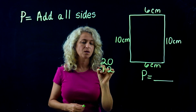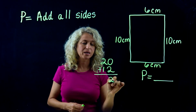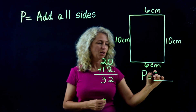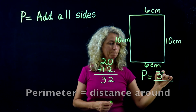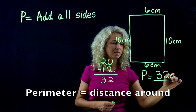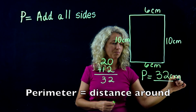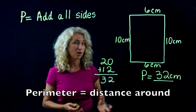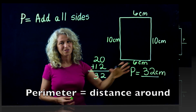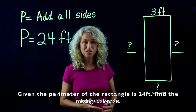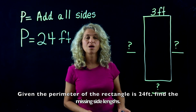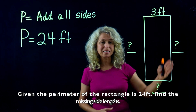You can simply add those and get your final perimeter: 32 centimeters. That is your perimeter — all the way around. All right, so here's another problem where we have a rectangle.